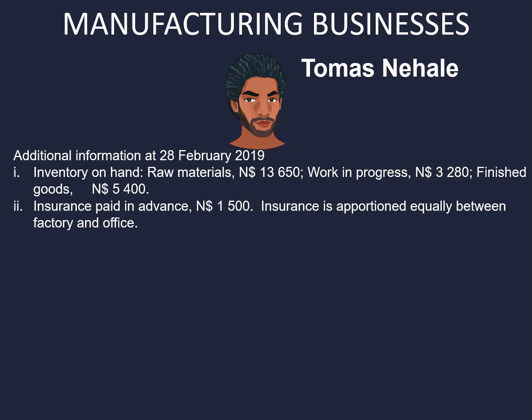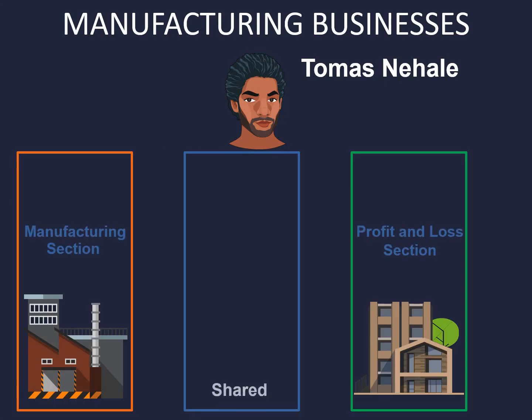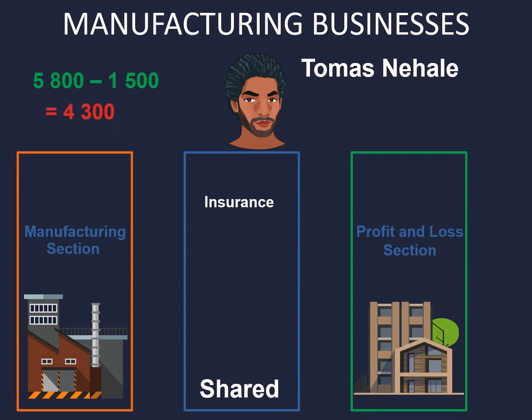The second point is insurance paid in advance 1,500. Insurance is apportioned equally between the factory and the office. We have our manufacturing section and we have our profit and loss section, and the part that is shared is insurance. We have an amount of 5,800 and insurance was paid in advance by 1,500. That means we need to decrease our expense by 1,500, which gives us 4,300.